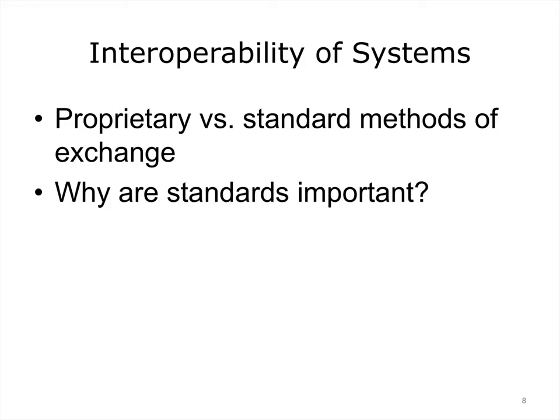Computerized information systems have always been able to exchange data. How one software system exchanges information with another may be very dependent on the vendor or vendors that created the systems. Let's take, for example, an email system. We take for granted now that we can compose an email message to a friend using whatever email software and provider we prefer, and as long as we have the correct email address, we can be reasonably sure that the message will be received. We don't have to know what kind of email software the friend is using.